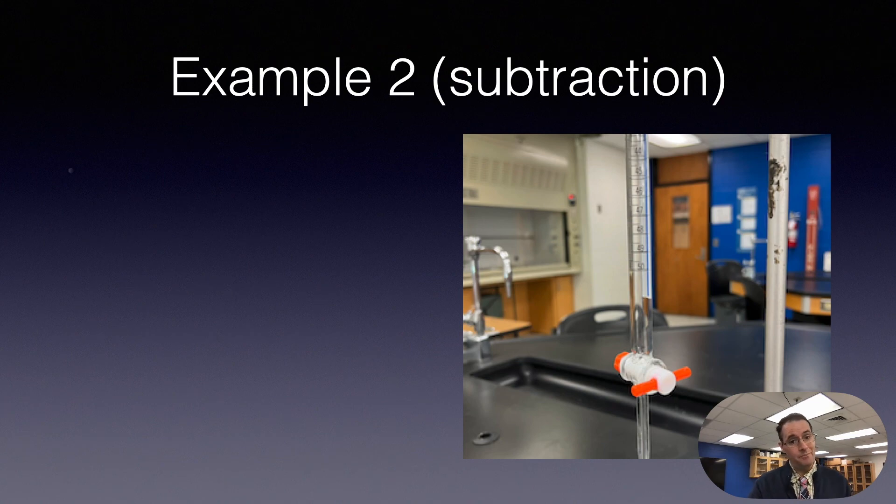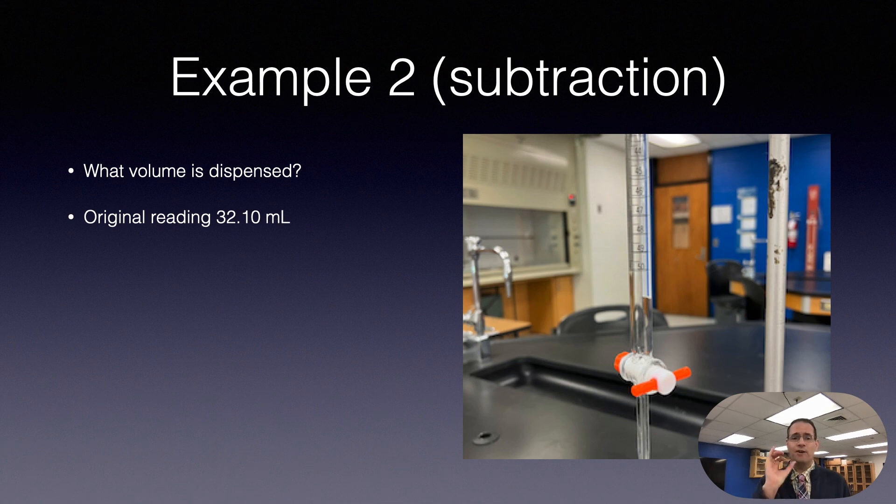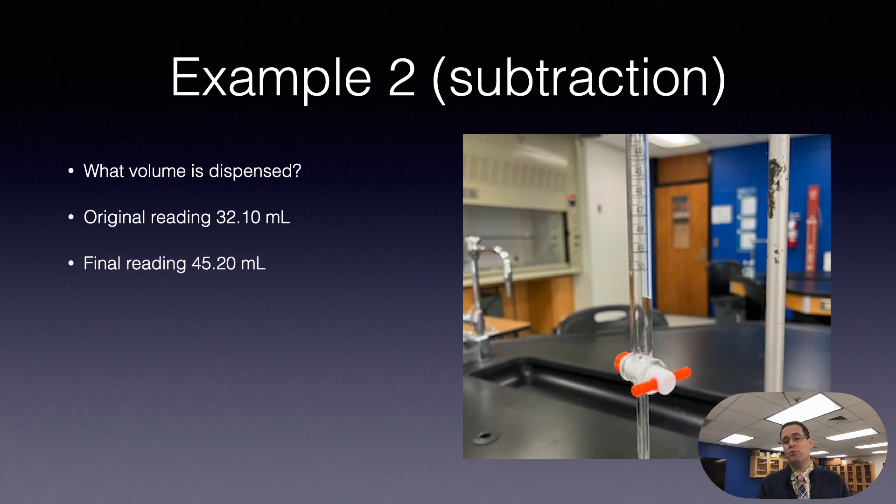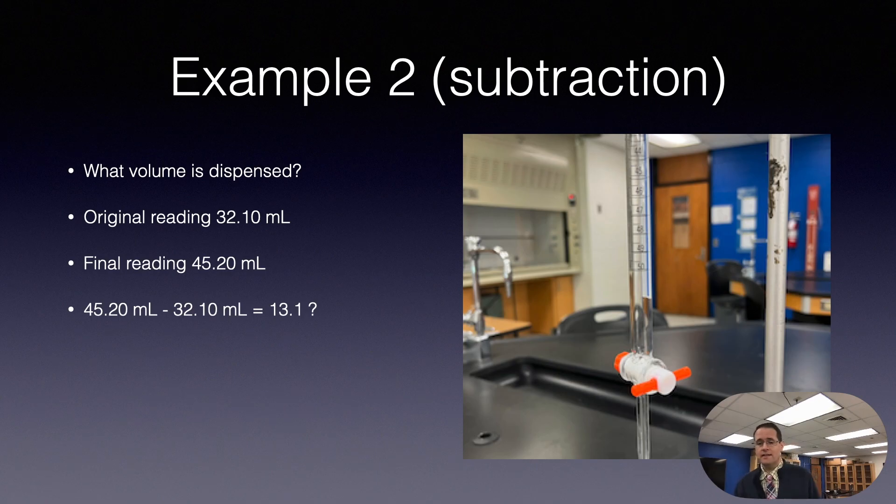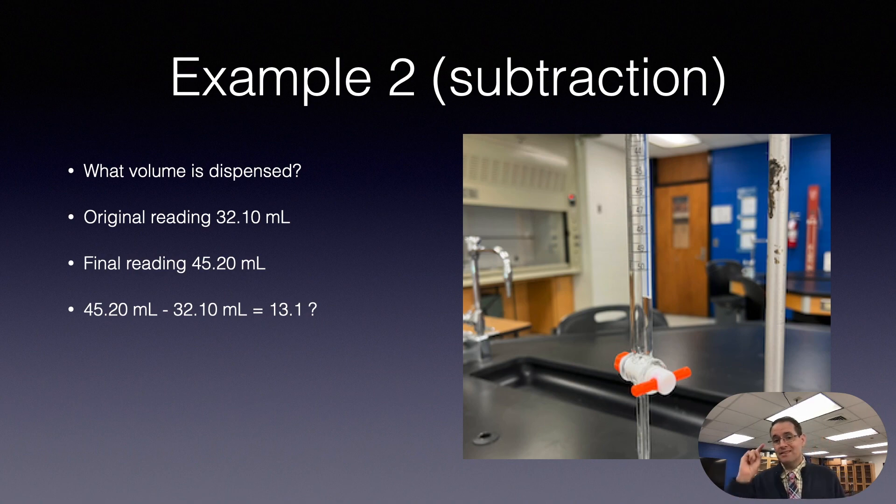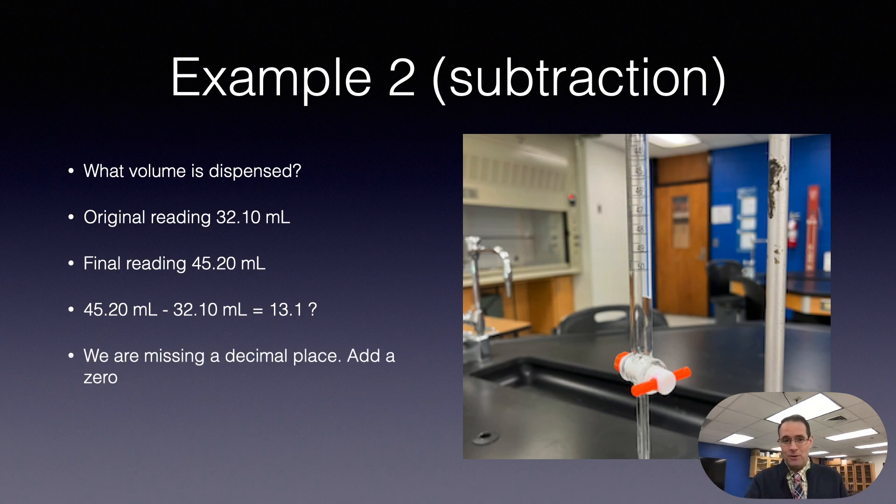Let's look at an example where it might not be the case. Again, what volume is dispensed? Let's say the original volume reading is 32.10 and the final volume reading is 45.20. If we do the math on our calculator, it's going to show 13.1, which has only one decimal place, but this glassware is accurate to two decimal places. So what we need to do is add a zero. If it's after the decimal place, you can add a zero without changing the quantity but you do change the precision or how many decimal places there are, and therefore the number of sig figs.